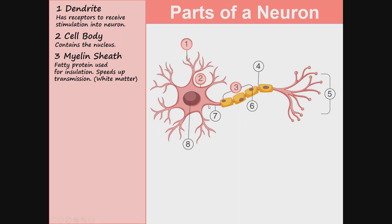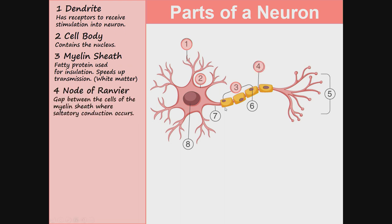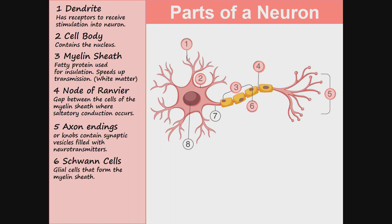The myelin sheath is a fatty protein used for insulation that speeds up transmission. If a neuron has a myelin sheath, it is referred to as white matter because myelin is made of a fatty protein and fat is white. The node of Ranvier is the gap between the cells of the myelin sheath where saltatory conduction occurs. The axon endings or knobs contain synaptic vesicles filled with neurotransmitters. Schwann cells are glial cells that form the myelin sheath. The axon is an extension of the cell body that carries the impulse.